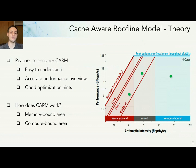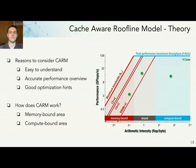These roofs define two main areas below them: the memory bound and compute bound areas. If your application is plotted under the memory bound area, the CARM model indicates that in order to best improve your performance, you need to consider memory optimization strategies for your code — for example, taking better advantage of the caches, the prefetchers, and improving communication inside your code.